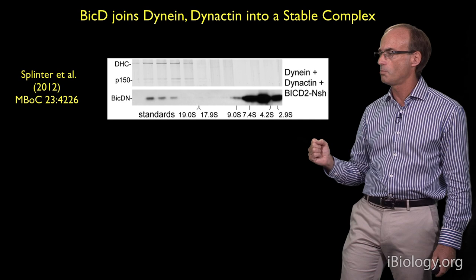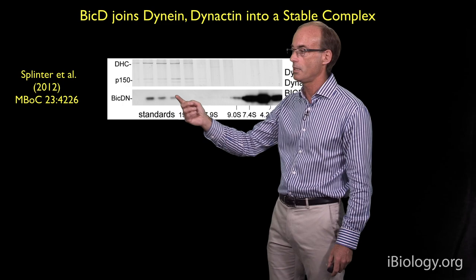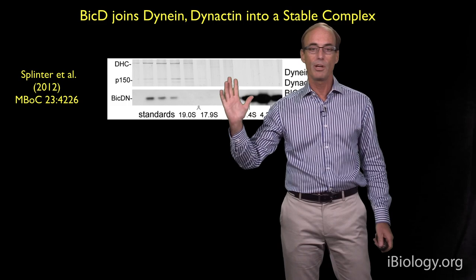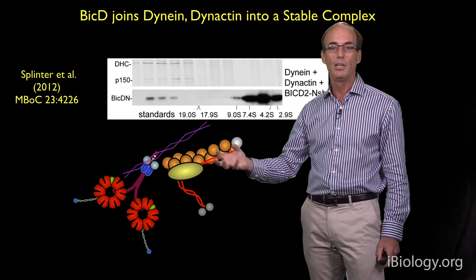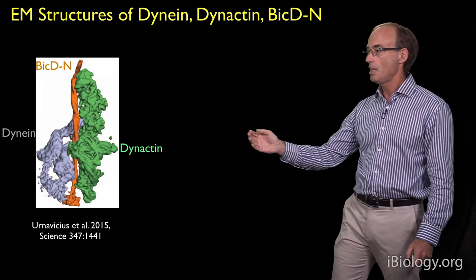In the sucrose gradient, the top band is dynein, this is the P150 subunit of dynactin, and this lower band is BicD. They all co-migrate together, so we think they're interacting all together in one large complex. With the recent cryo-EM work, we actually have some idea why and how BicD can join dynein and dynactin together.